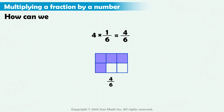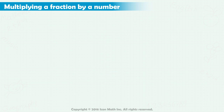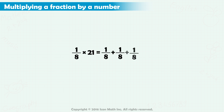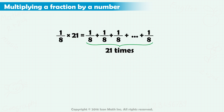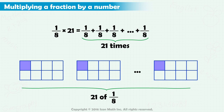What if we multiply the fraction by a number larger than the denominator? We do the same thing. For example, suppose we multiply 1 eighth by 21. This means we add 1 eighth 21 times. So, we need 21 shaded parts out of a total of 8 parts, and the result is 21 eighths.